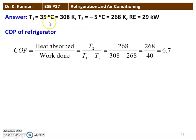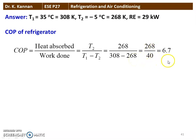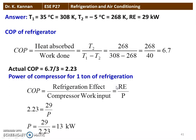The temperatures are T1 equal to 35 degree Celsius, which is 308 Kelvin; T2 equal to minus 5 degree Celsius, which is 268 Kelvin. The refrigeration effect equals the heat leakage, which is 29 kilowatts. The COP of the refrigerator based on temperature: COP equals minimum temperature divided by the temperature difference, so 268 divided by 308 minus 268, which is 268 by 40, equal to 6.7. The actual COP is one third of the theoretical COP, so 6.7 divided by 3 equals 2.23. Power of the compressor: COP equals refrigeration effect divided by compressor work input, so 2.23 equals 29 divided by power. Power equals 29 divided by 2.23, equal to 13 kilowatt.